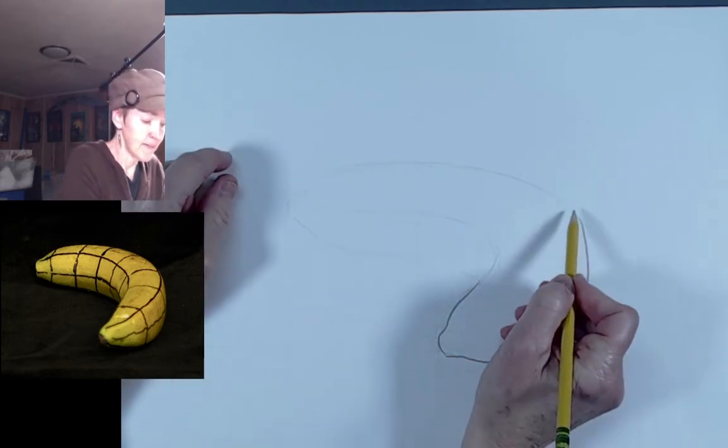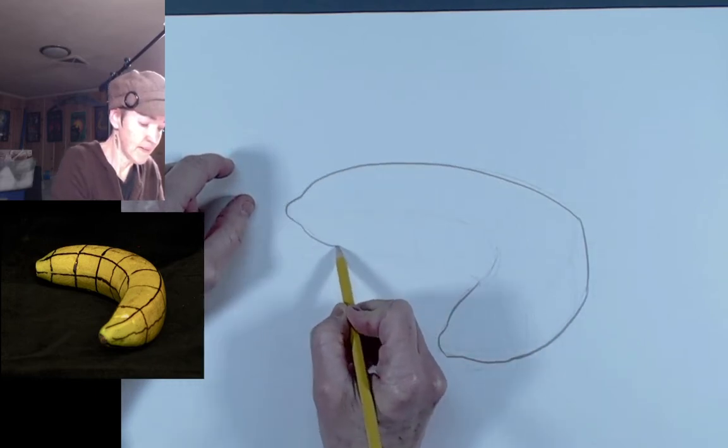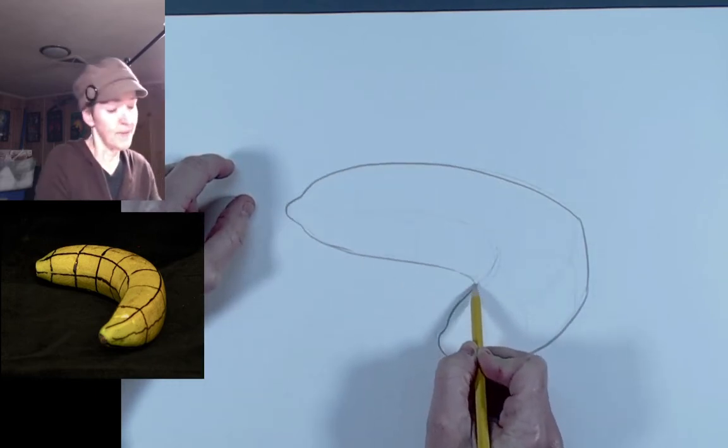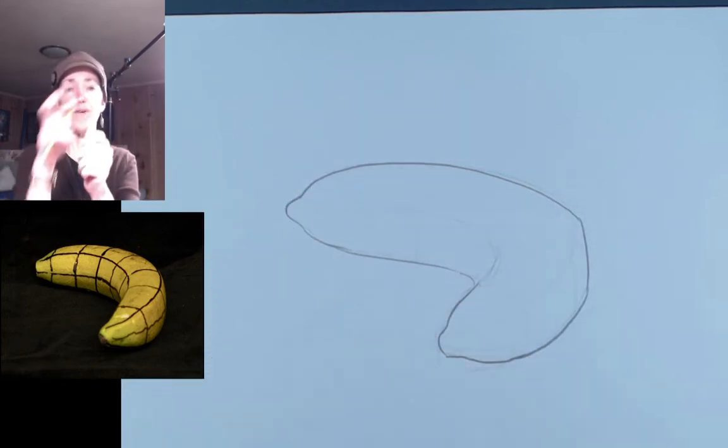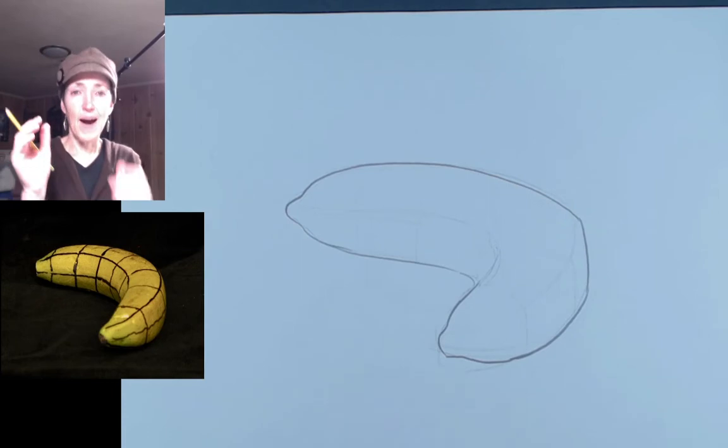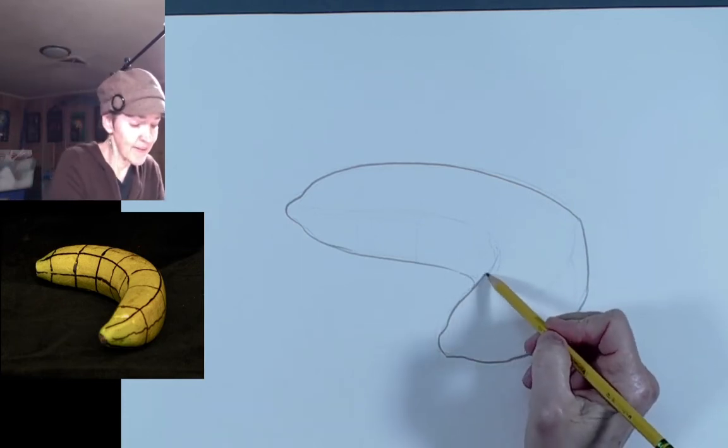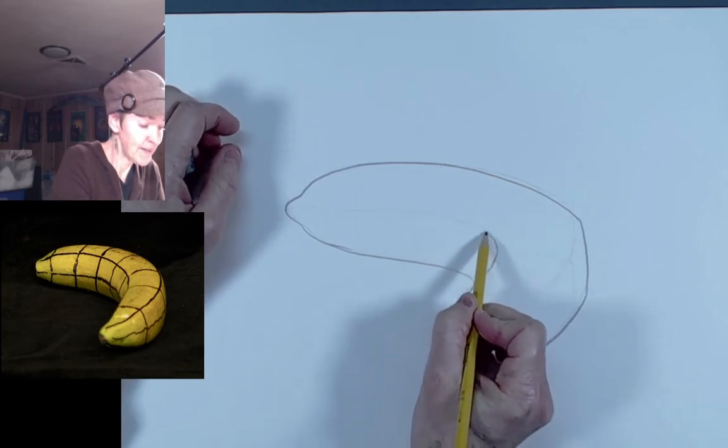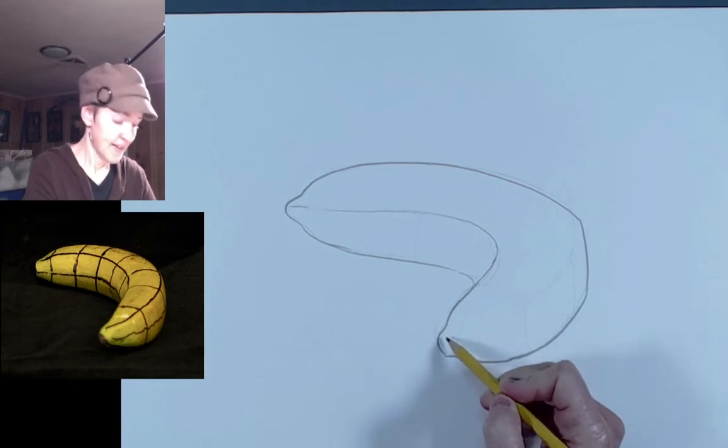So we've got kind of the basic shape, like the silhouette, like if you had to cut that photograph of the banana out, what would that shape be? But then we also need to get these inner contours. These are really important to kind of explain how the planes overlap spatially. And there's another one here.